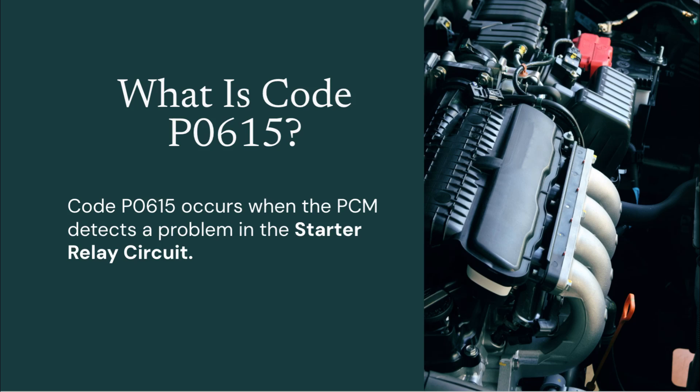The code is P0615. This code indicates a starter relay circuit malfunction, meaning the powertrain control module (PCM) has detected a fault in the circuit that controls the starter relay. The starter relay is a critical part of the starting system — it allows a small signal from the ignition switch to activate the larger current needed to turn the starter motor and crank the engine.